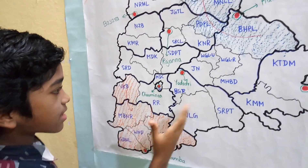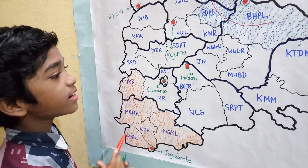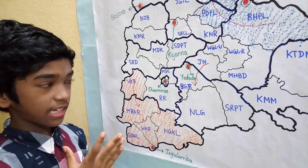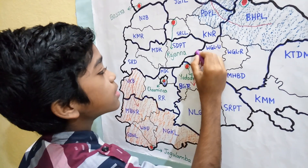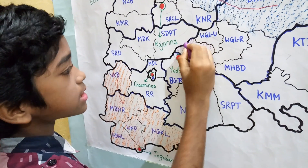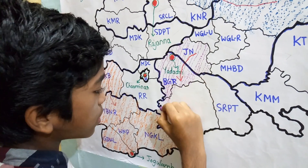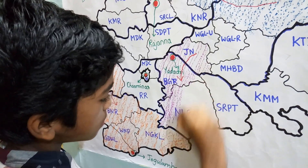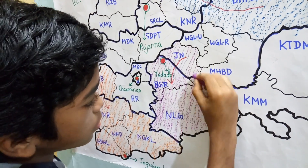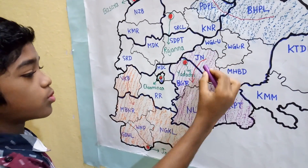Now, let us come here. We do the same — we take the old Nalgonda district and add Jangaon to it, so that we get Yadadri zone. This zone also has 4 districts: Jangaon, Yadadri Bhuvanagiri, Nalgonda, and Suryapet.